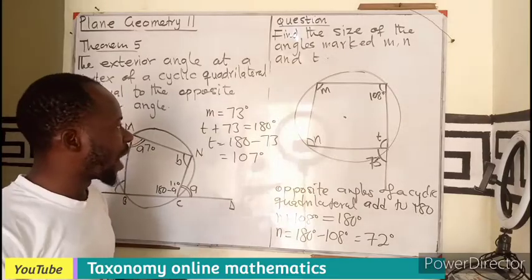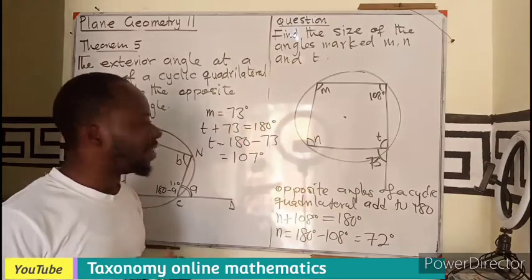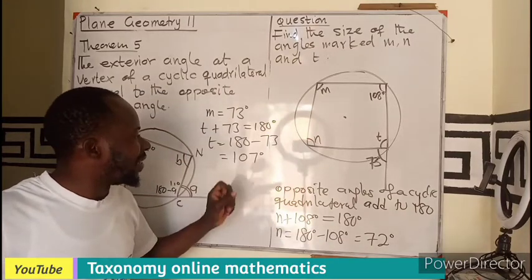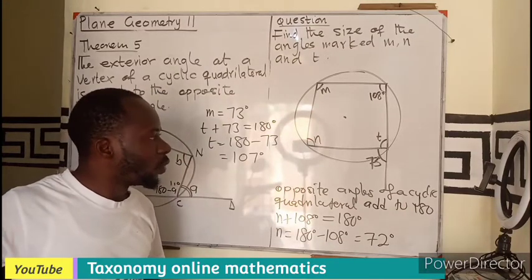So just the values of our M will be 73. That of the N will be 72. Then T will be 107.